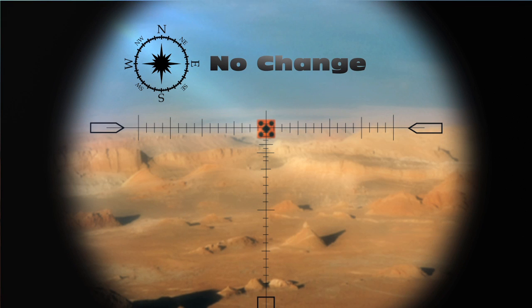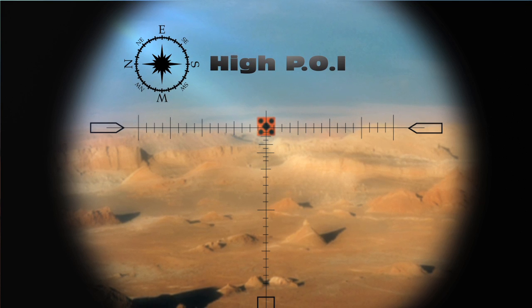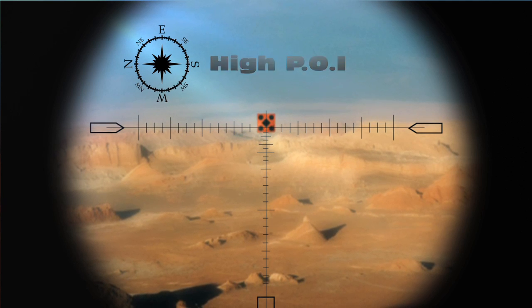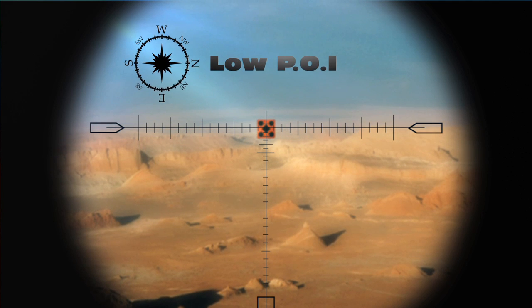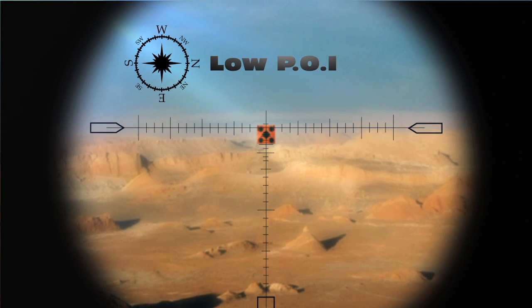The effect is negated when shooting north or south, and opposite when shooting east or west. When shooting east, the point of impact would be high, and when shooting west, it will be low.